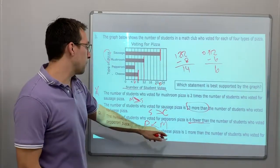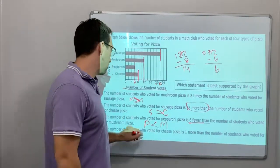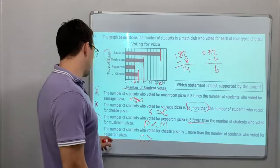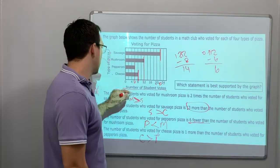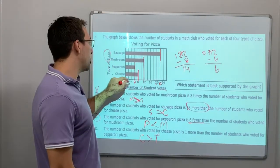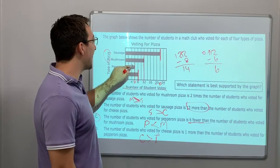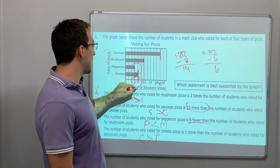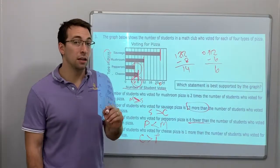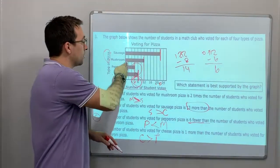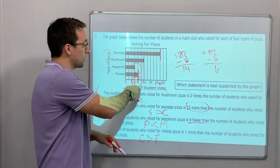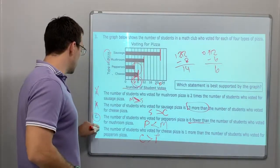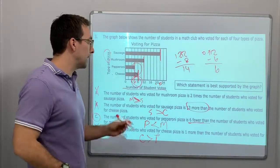Choice D: the number of students who voted for cheese pizza is 1 more than the number who voted for pepperoni. But look — the scale isn't counting by 1, it's counting by 2. So that's wrong. Answer is C.